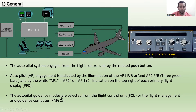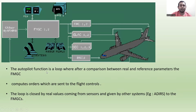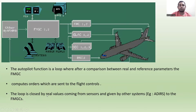The autopilot guidance modes are selected from the Flight Control Unit FCU or the Flight Management and Guidance Computers FMGCs. The autopilot function is a loop: after a comparison between real and reference parameters, the FMGC computes orders which are sent to the flight controls. The loop is closed by real values coming from sensors given by other systems — for example, ADIRS — back to the FMGCs.